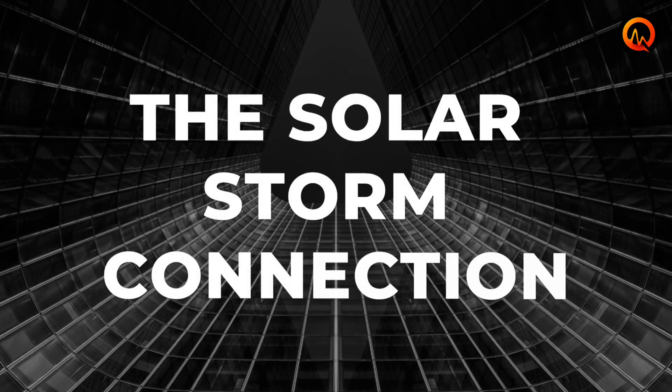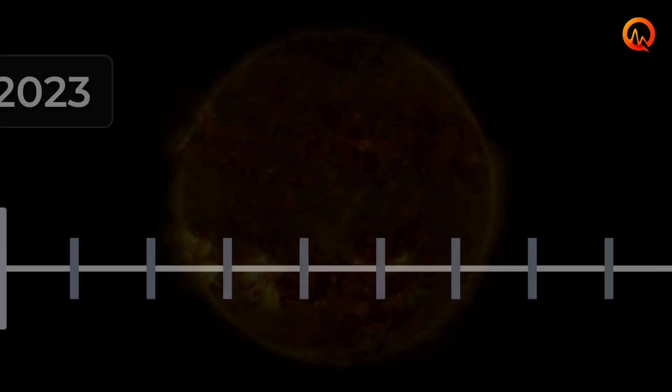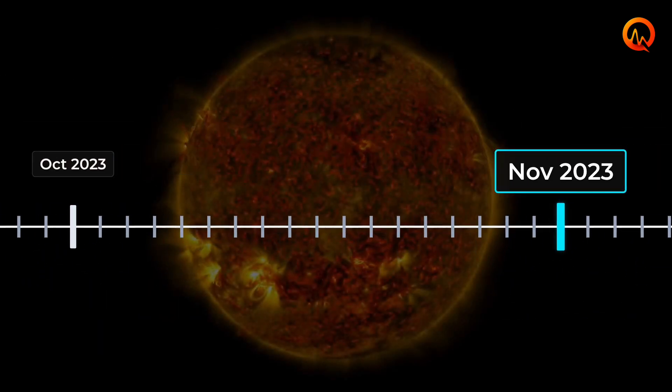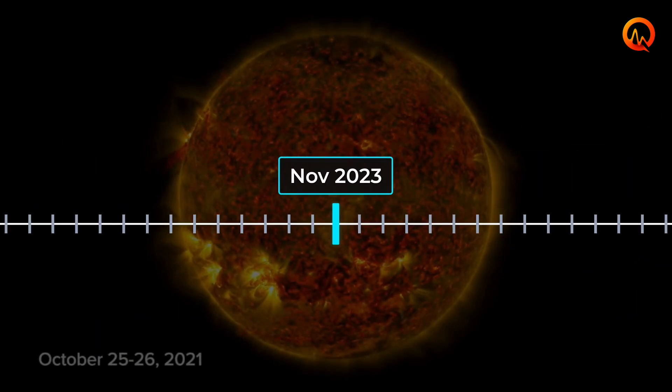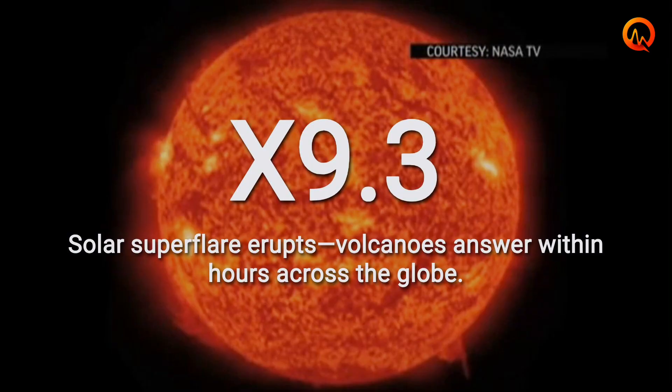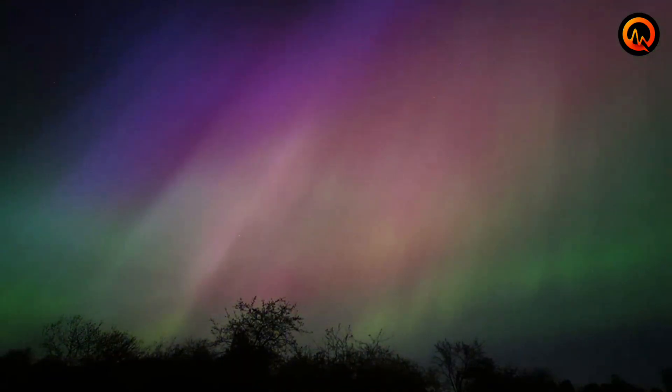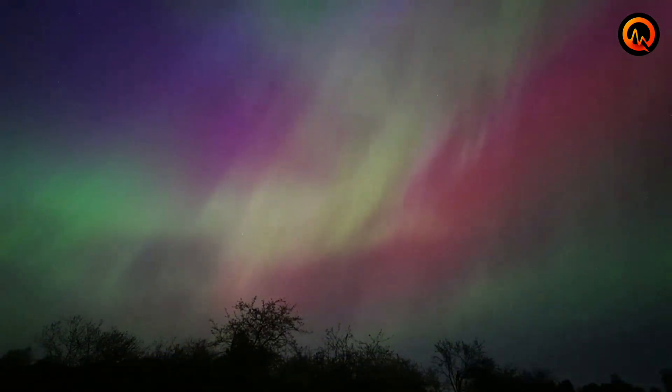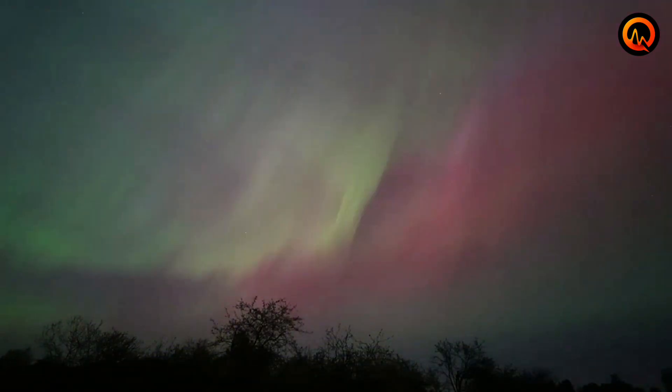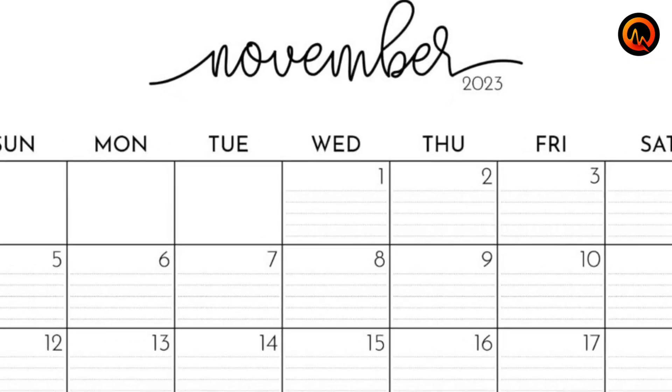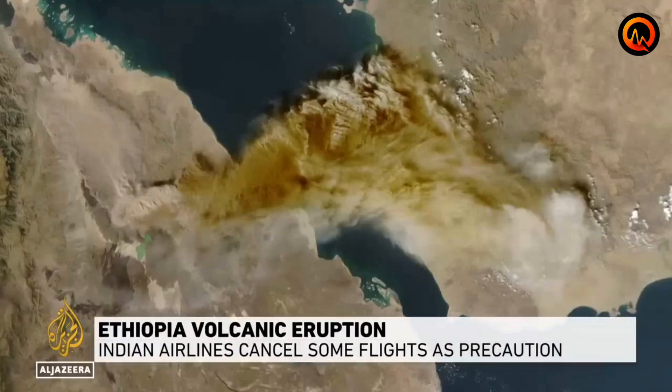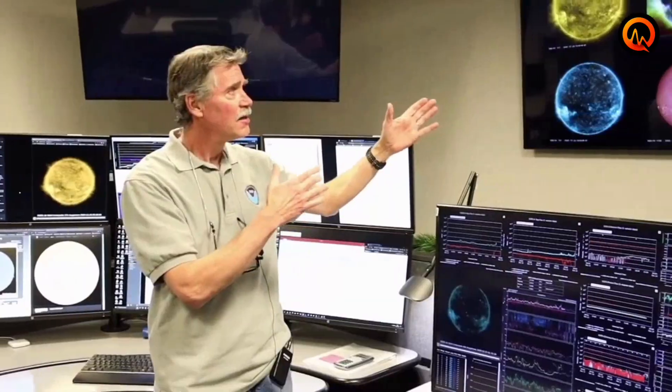The timeline reveals a crucial pattern. Between October 15th and November 8th, Earth experienced a series of X-class solar flares, the most powerful category on the solar flare scale. The largest, an X9.3 flare on October 28th, triggered a G5 geomagnetic storm, the highest level on the Geomagnetic Disturbance Scale. Within two weeks of this solar bombardment, the first volcanic eruptions began. This timing is not coincidental.